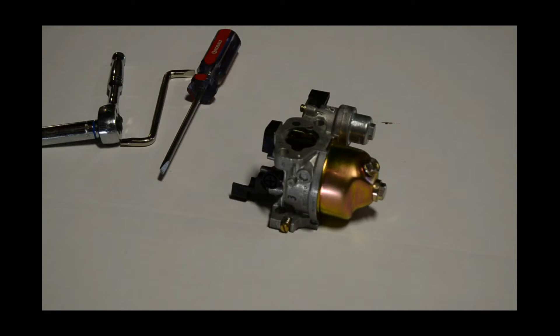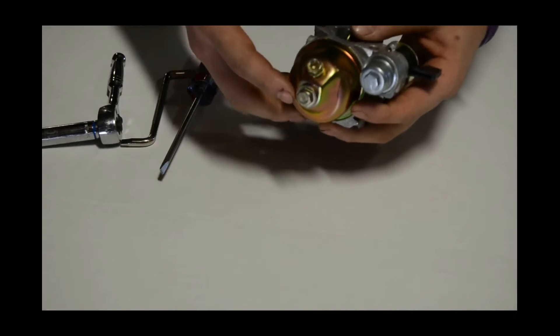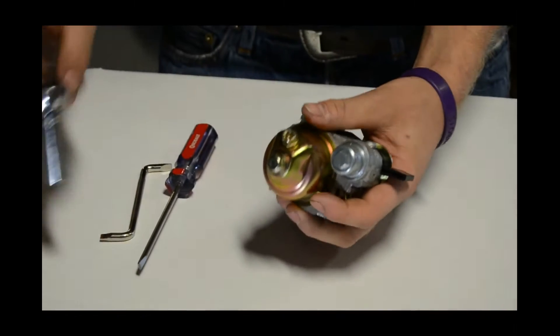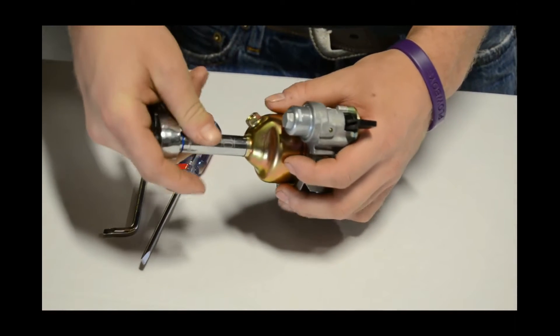Alright, today we're going to show you how to replace the main jet in your predator or clone style carburetor. You're going to need a 10mm wrench or socket, as well as a flathead screwdriver.